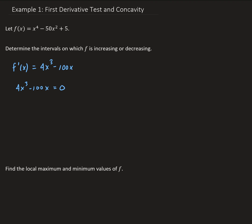We can go ahead and solve this by factoring out 4x. So we have 4x times (x squared minus 25) equals zero. This implies that 4x equals zero or x squared minus 25 equals zero, giving us x equals zero or x equals plus or minus 5.